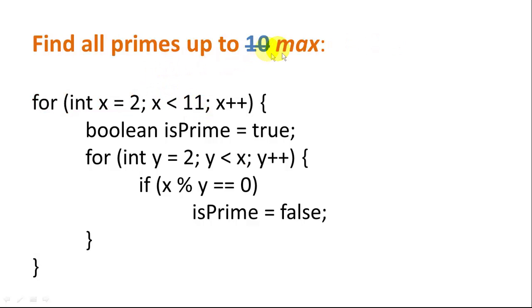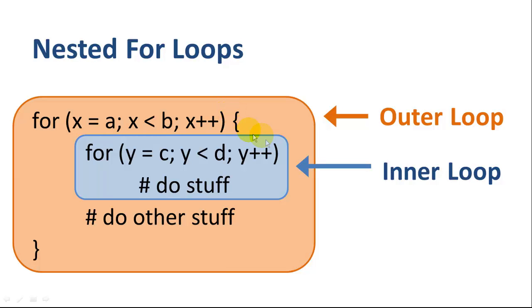So if we wanted to find all the primes up to some number, let's say max, we could simply substitute less than or equal to max. Then we can get the user to input a number for max, or we can initialize a constant for max, or whatever we want. But now we can calculate all the primes up to this number max, and max could be 1,000 or 1,000,000 or whatever we want it to be. So we're using nested for loops.